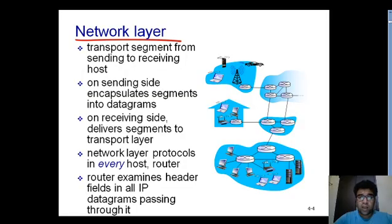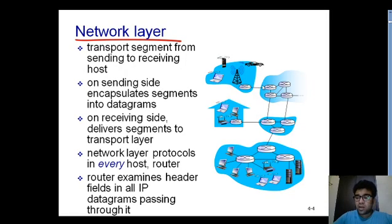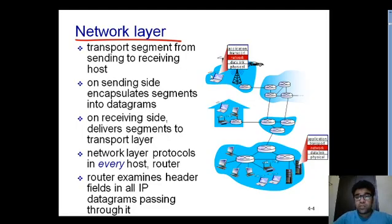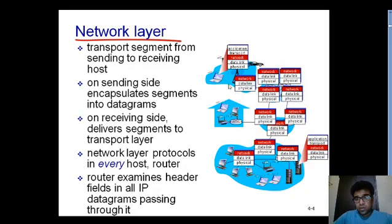The network layer is the third layer in the TCP/IP protocol suite, used for providing end-to-end communication. As you can see in the diagram on the right side of the slide, we have a source and a destination, and the network layer is responsible for providing the physical connection between source and destination.